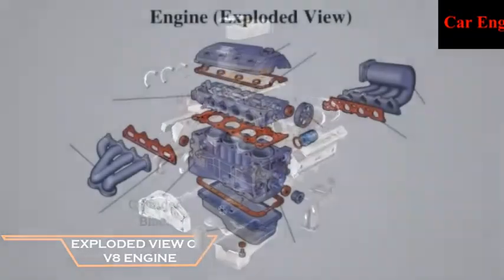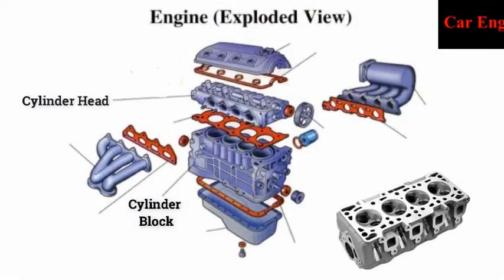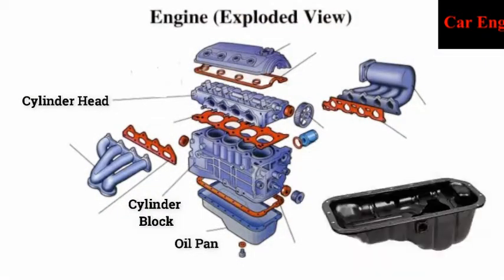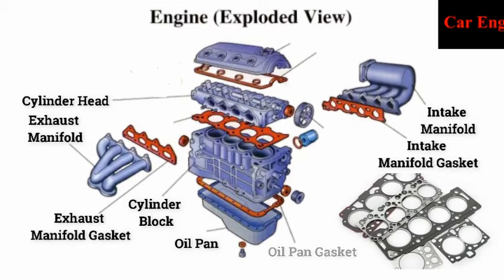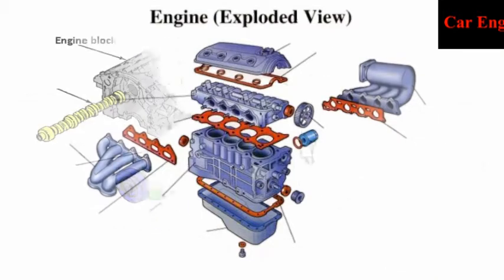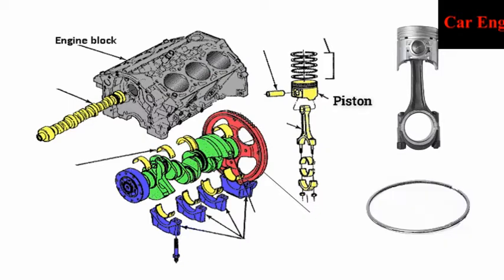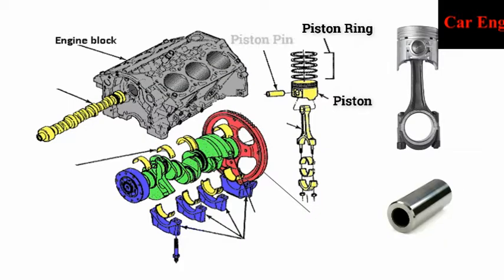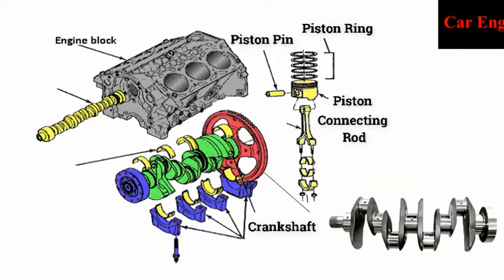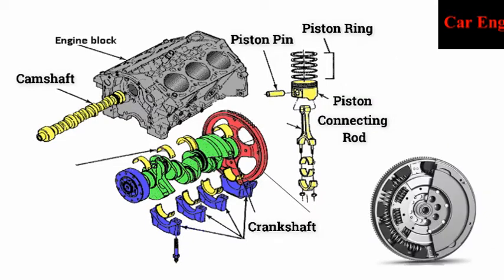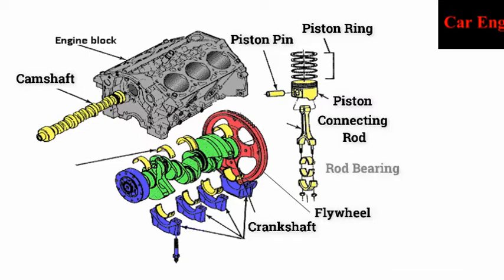The main parts of a car engine are: cylinder block, cylinder head, oil pan, manifolds, gasket, piston, piston ring, piston pin, connecting rod, crankshaft, camshaft, flywheels, rod bearing, main bearings, and bearing caps.